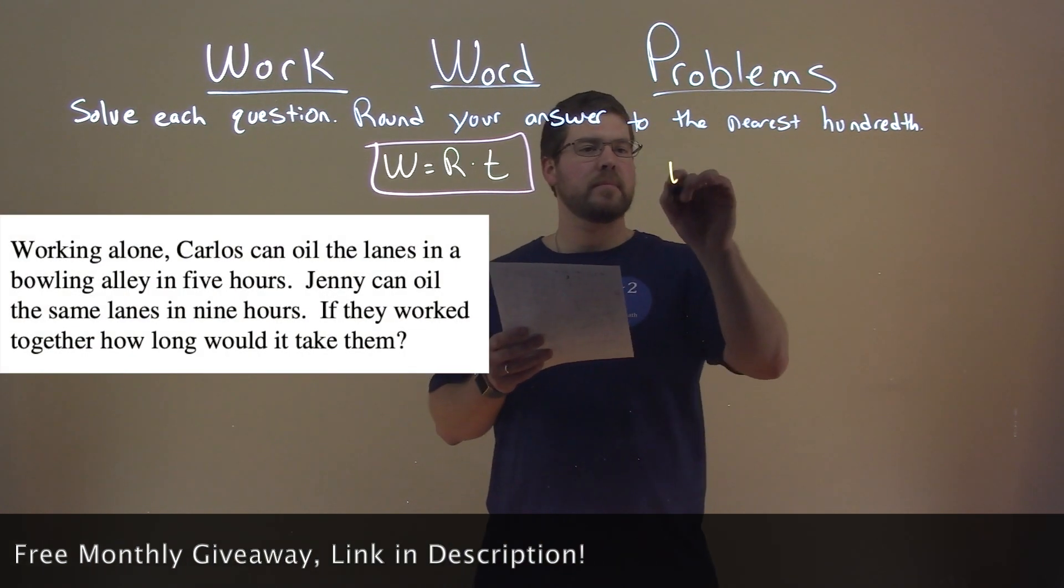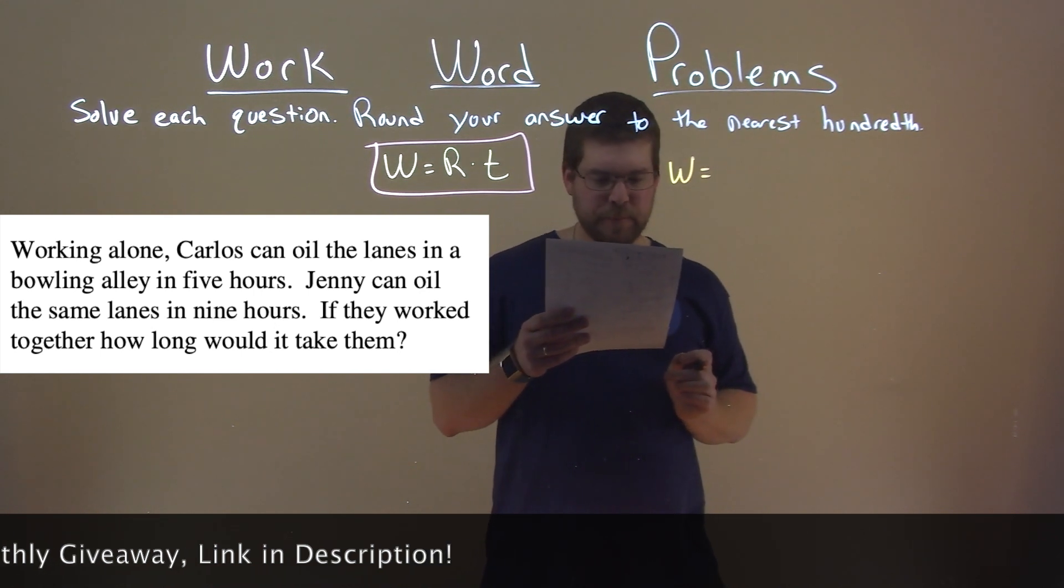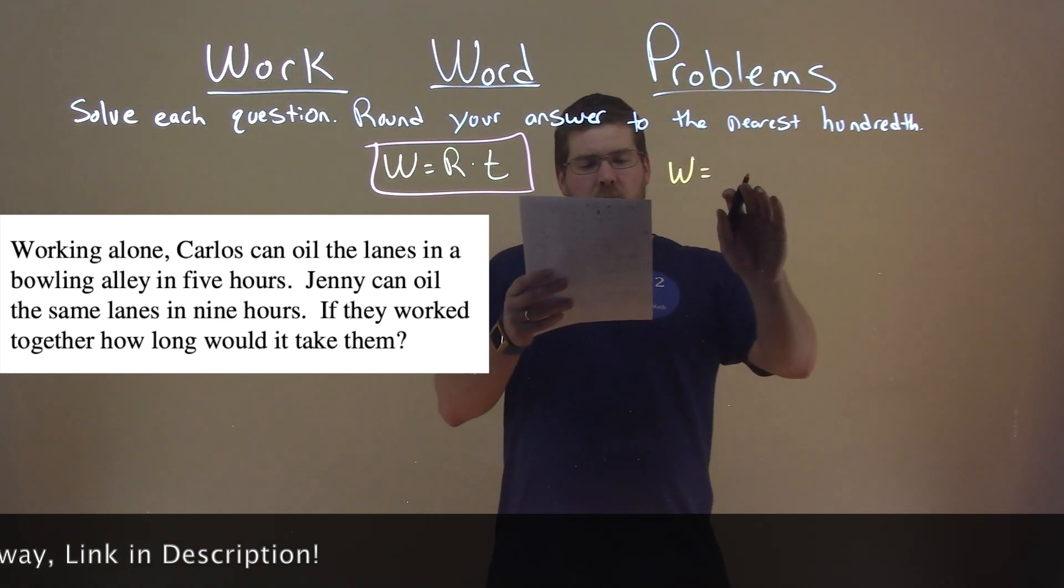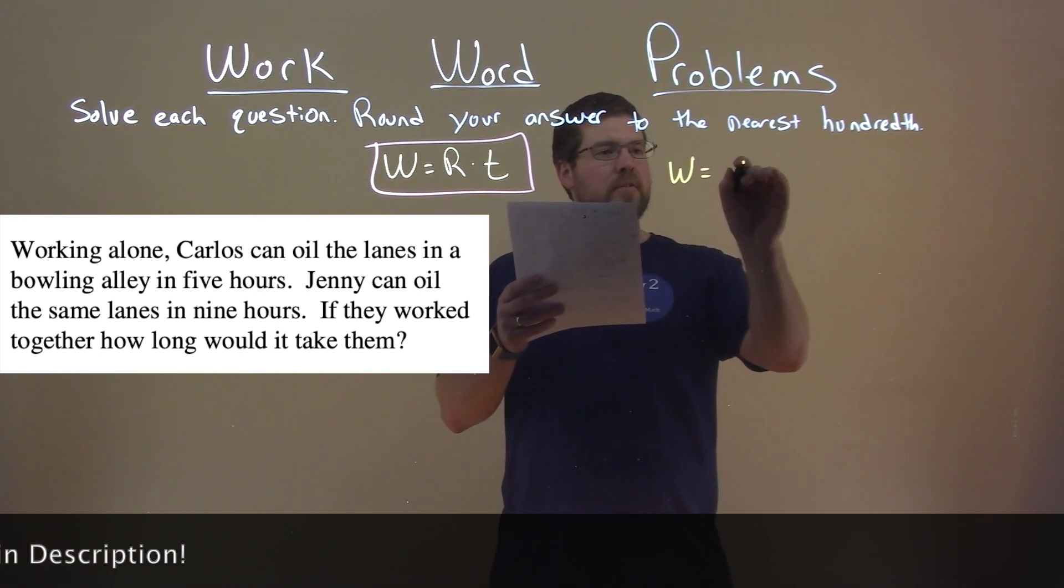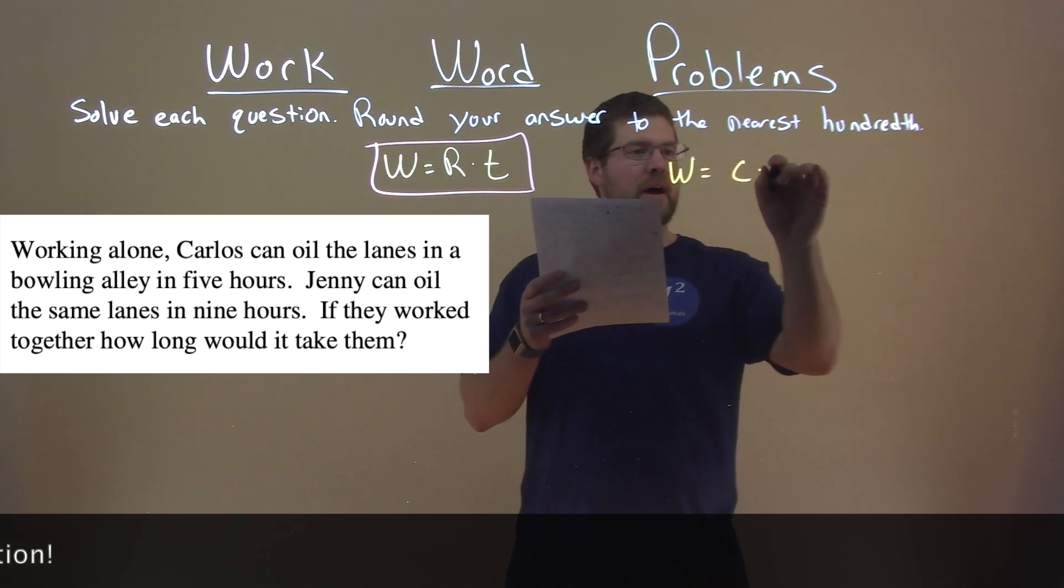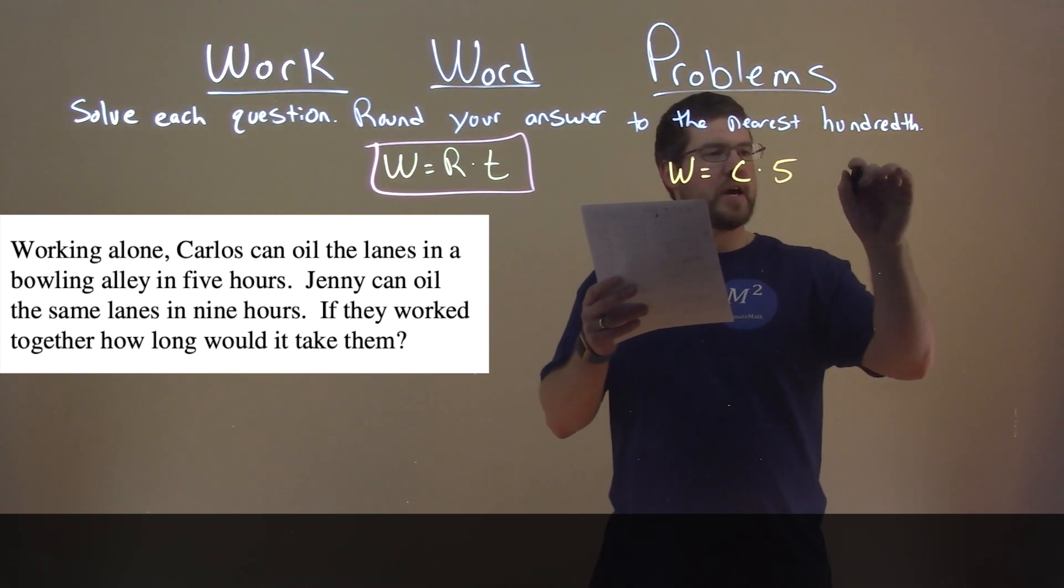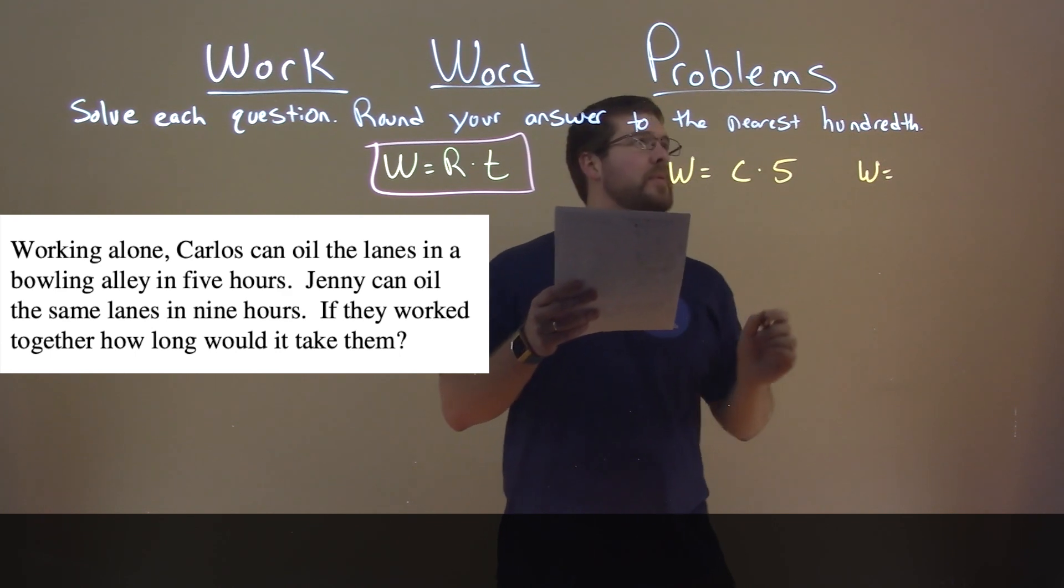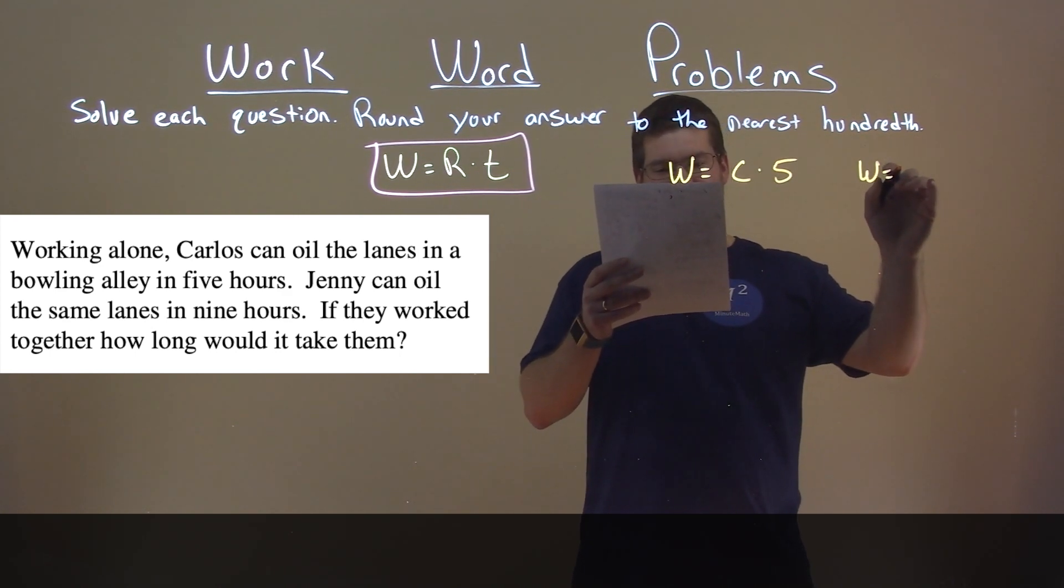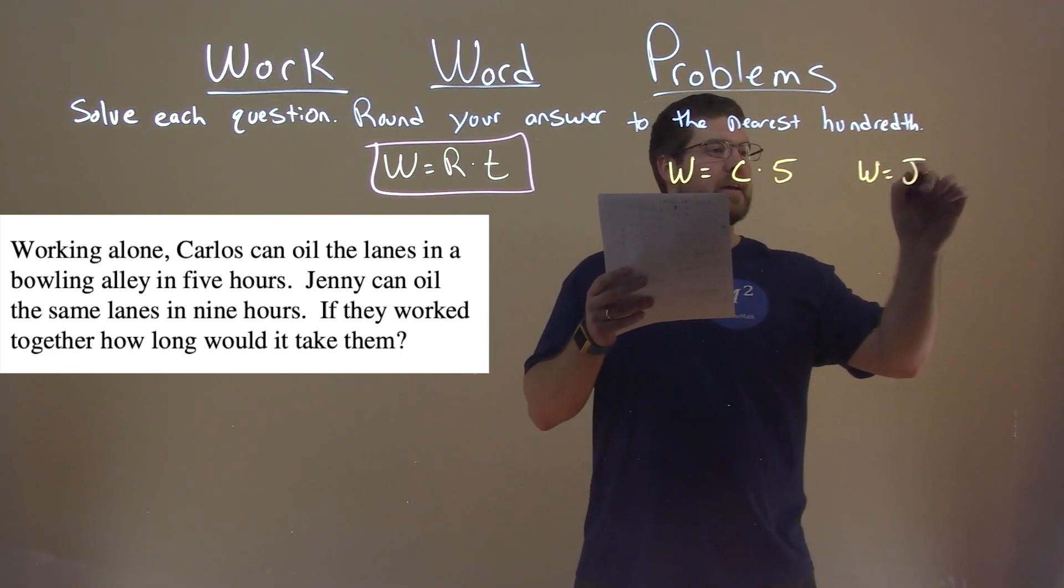So this job, the work it takes, W. Carlos can do that, so Carlos is right here, can do that in five hours. Jenny, the same work, can do the same lane in nine hours. So J times nine.